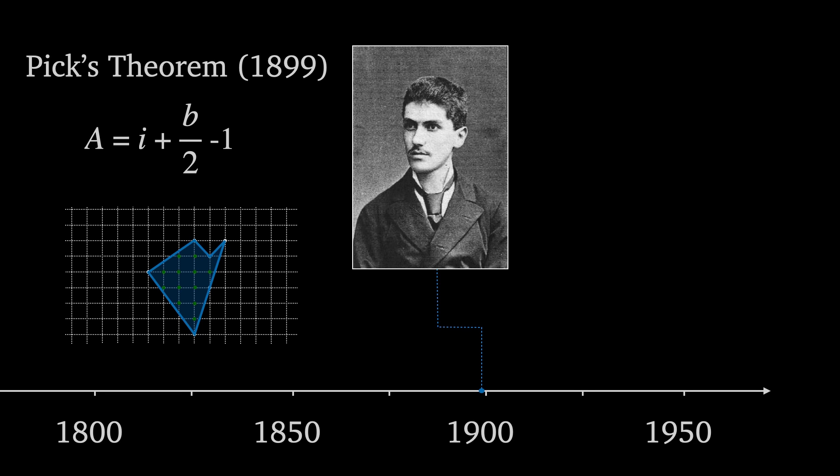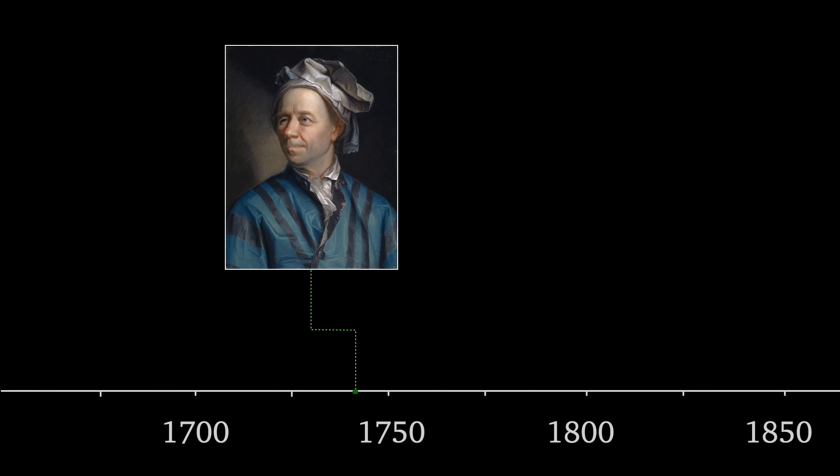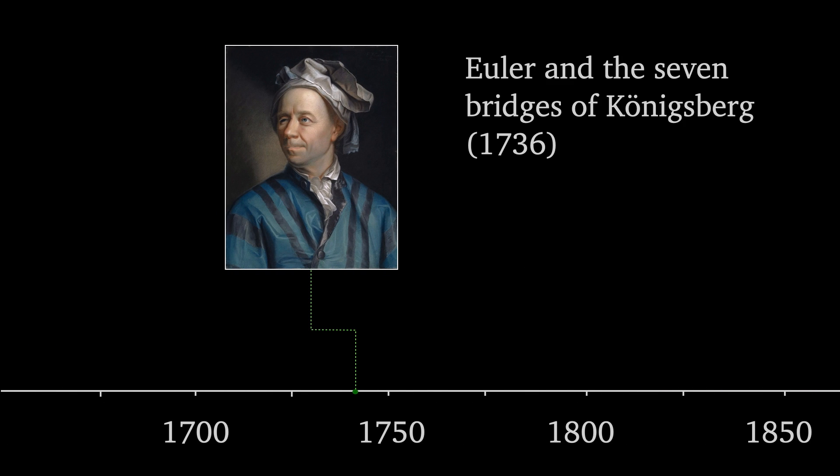First let's go back to 1736 to discuss Leonard Euler and the seven bridges of Königsberg. At the time, Königsberg contained four land masses connected by seven bridges. Mathematicians wondered if it was possible to find a route which would cross every bridge only once and return to the landmass you started from.